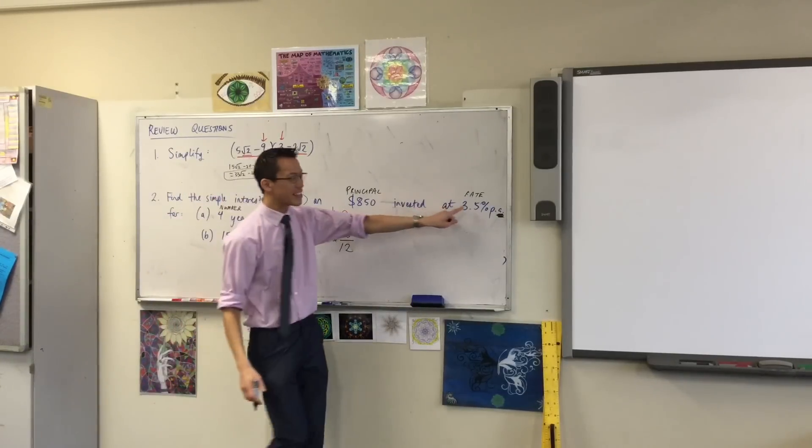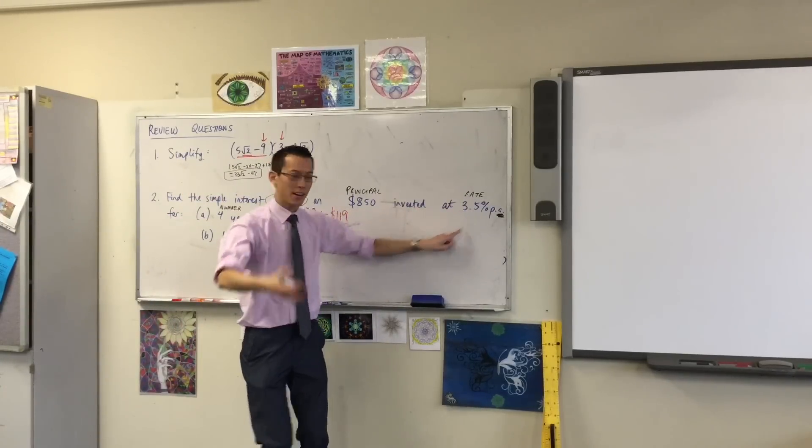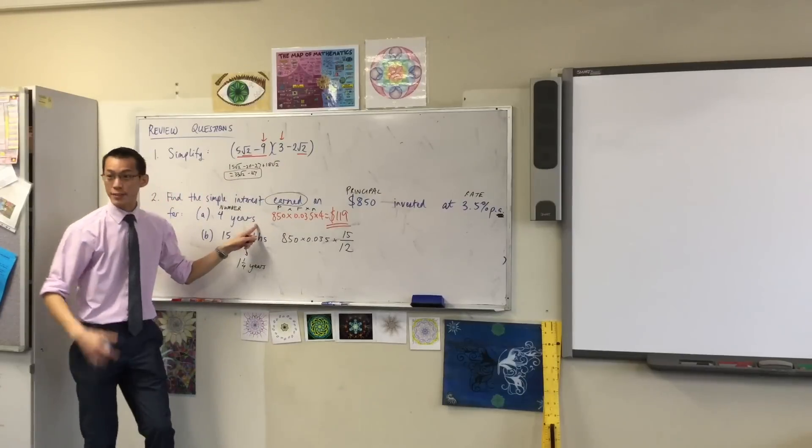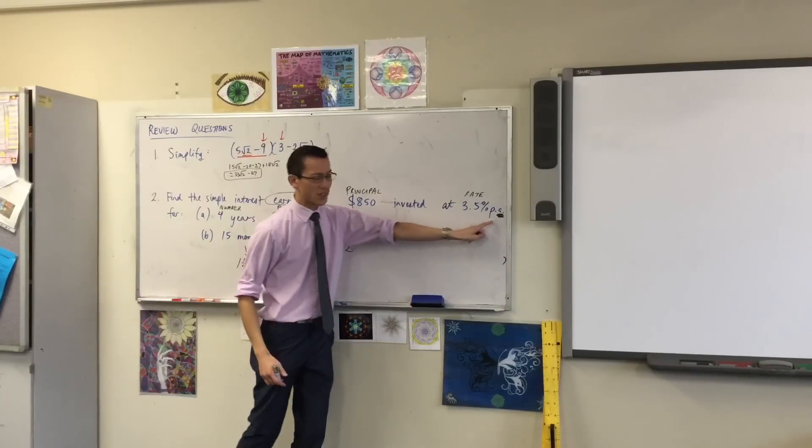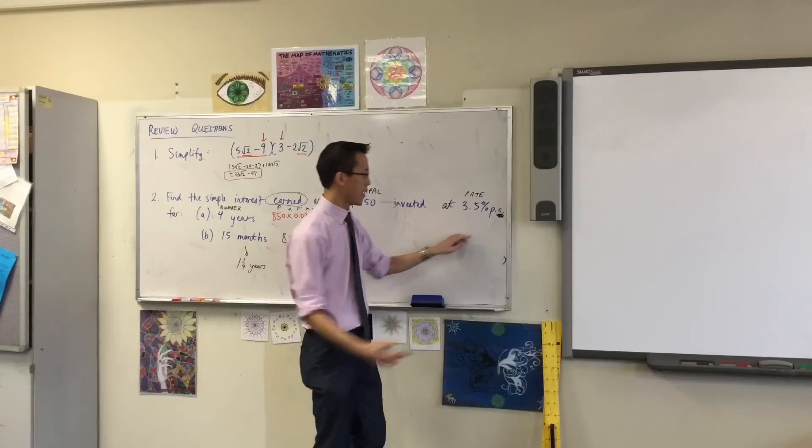So PA, right - per annum means annually. We get per annum and annually; they come from the same word. So if this interest rate is per year, then I want to get my time periods also per year.